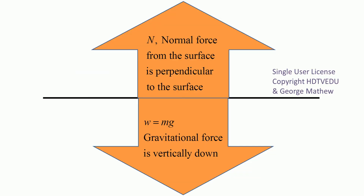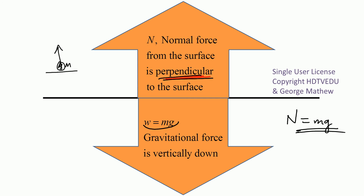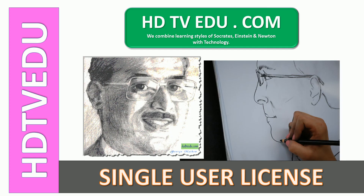Normal force from the surface is perpendicular to the surface. Gravitational force w equals mg, acting vertically down. Vector sum of forces is zero, so normal force equals mass times acceleration due to gravity. The strategy is: isolate the non-zero mass, look at the forces acting on it — normal force and gravitational force — then set normal force equal to gravitational force because net force is zero. Apply this thought process to determine the normal force.